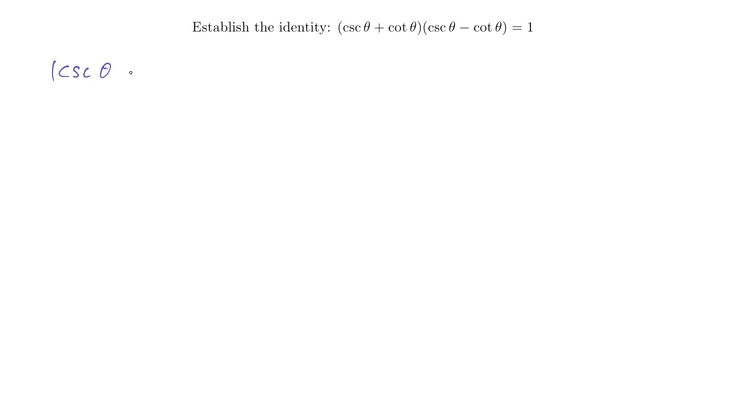We get cosecant of theta plus cotangent of theta times cosecant of theta minus cotangent of theta equals. We don't know what equals 1 yet. We have to just figure out what it equals using algebra and trigonometry.